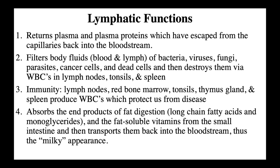Here are the four main functions of the lymphatic system. First, it returns plasma and plasma proteins that have escaped from the capillaries back into the bloodstream. It also filters body fluids like blood and lymph of bacteria, viruses, fungi, parasites, cancer cells, and dead cells, destroying them through white blood cells in the lymph nodes, tonsils, and spleen. It has an immunity aspect where lymph nodes, red bone marrow, tonsils, thymus gland, and spleen produce white blood cells to protect us. Finally, it absorbs end products of fat digestion — long-chain fatty acids, monoglycerides, and fat-soluble vitamins — from the small intestine and transports them back into the bloodstream, giving it a milky appearance.